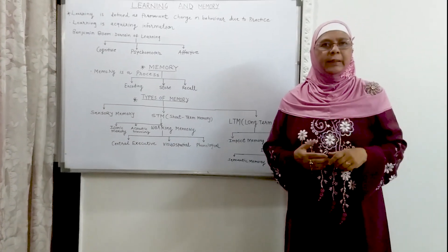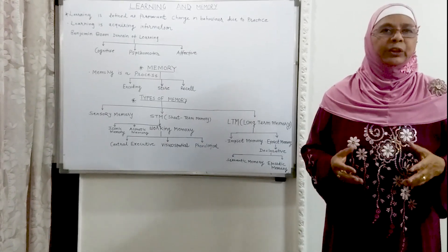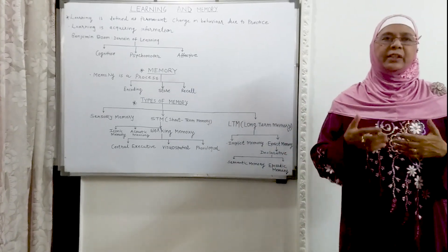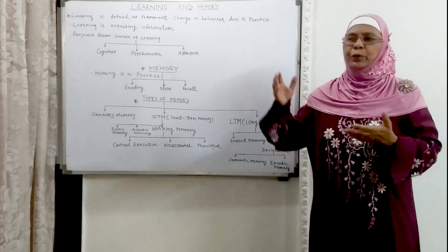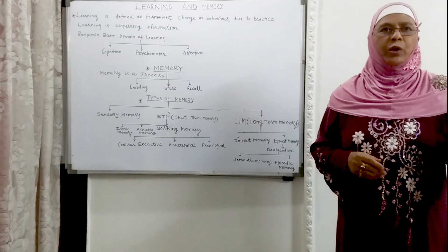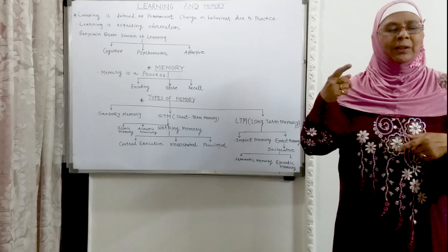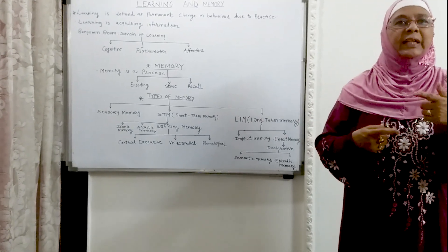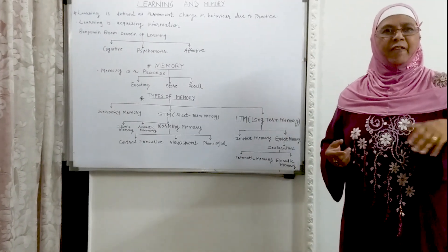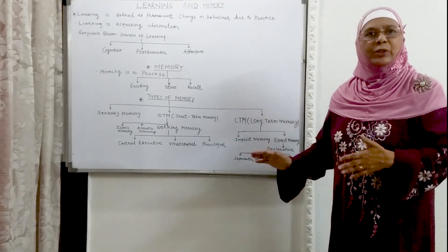What is implicit memory? In implicit memory, we do not have to be very conscious — unconsciously we are accumulating and learning certain information. For example, we are going to attend our class and someone is playing a song on a mobile, and that song goes on and on in our brain. Unconsciously that song is getting registered in our memory. We are not doing any type of effort; effortlessly and unconsciously the information is getting registered. That type of memory is known as implicit memory.